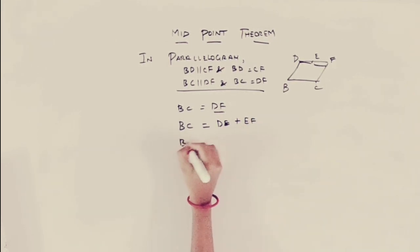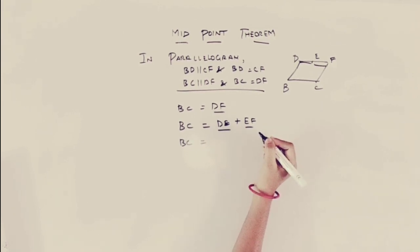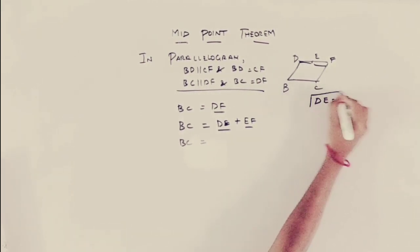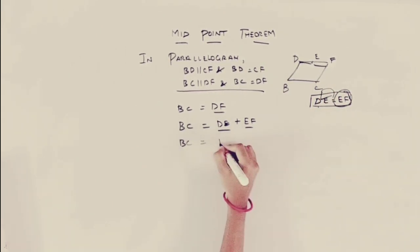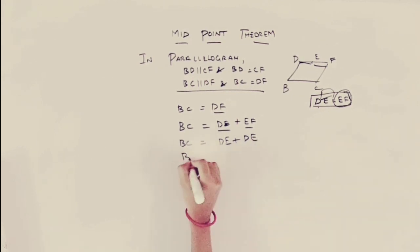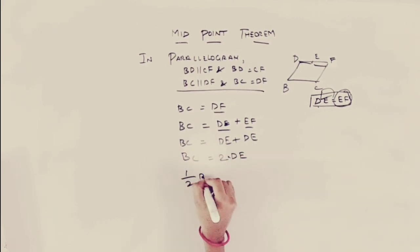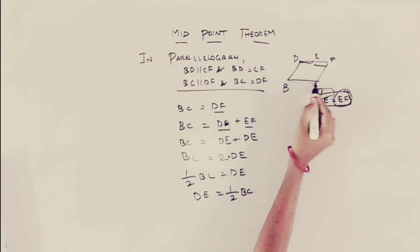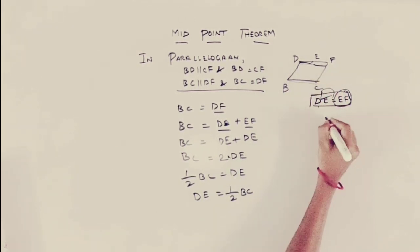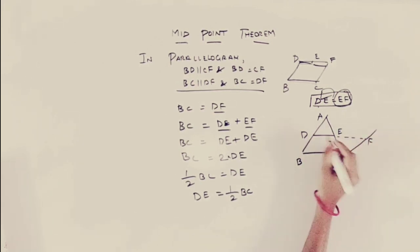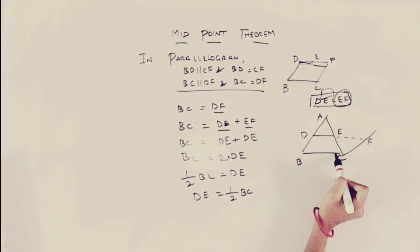In the parallelogram, BD is parallel to CF and BD equals CF. Since DE equals EF, we have BC equal to DE plus EF, which gives BC equals 2 DE. So DE equals half of BC.